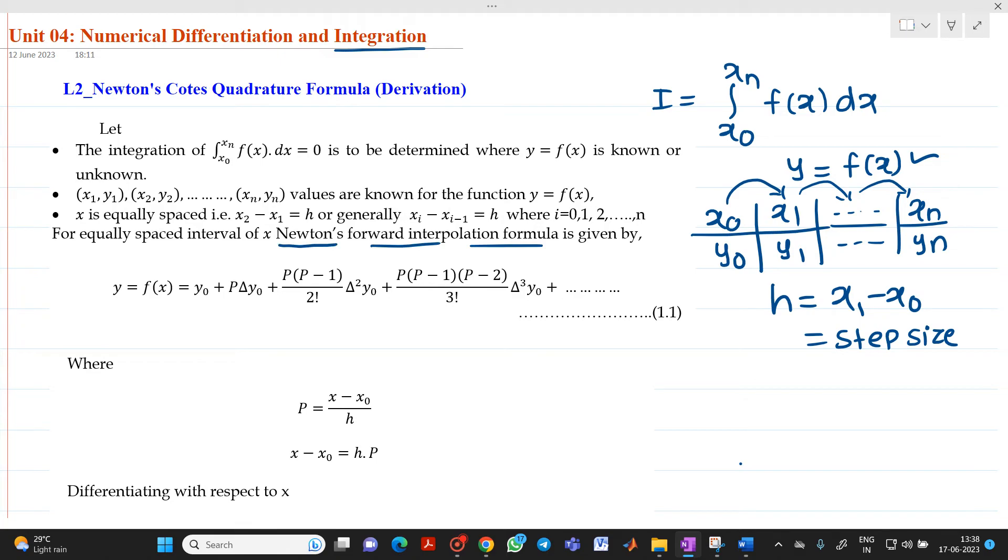we can write y equal to f of x equal to y0 plus p delta y0 plus p into p minus 1 upon 2 factorial delta square of y0 plus p into p minus 1 p minus 2 upon 3 factorial delta cube of y0. Treat this as equation number 1.